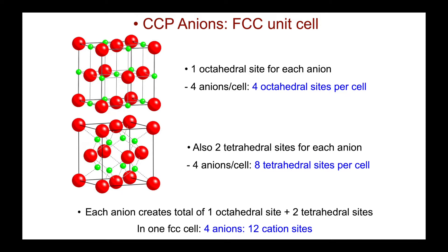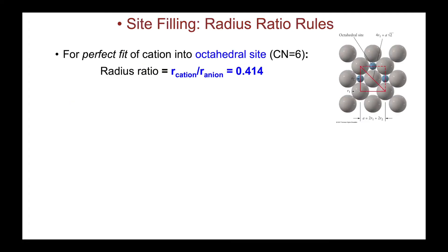Therefore, if we add all of these up in one unit cell, we have four anions and twelve cation sites. To ascertain the filling of these sites by the cations, we use simple geometry and so-called radius ratio rules. From the geometry of the anion arrangement, the size of these holes can be calculated.